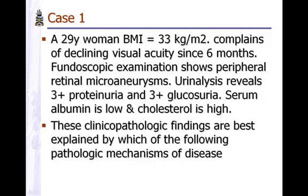First case: 29-year-old woman, 33 kg BMI — that is high, obese. Declining visual acuity since 6 months, fundoscopic examination showing retinal microaneurysms, urinalysis showing severe proteinuria and glucosuria. Although the age is slightly younger, it is typical of a chronic presentation — 6 months of declining visual acuity. What is the pathologic mechanism?